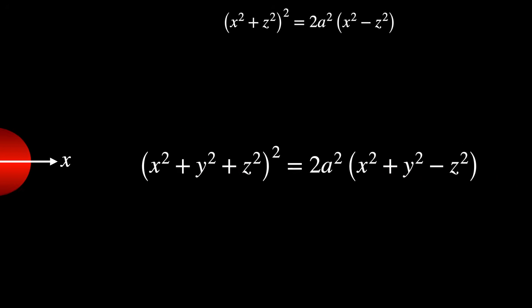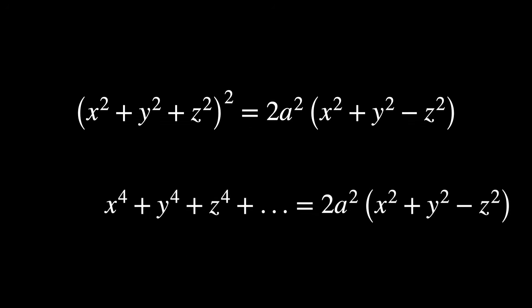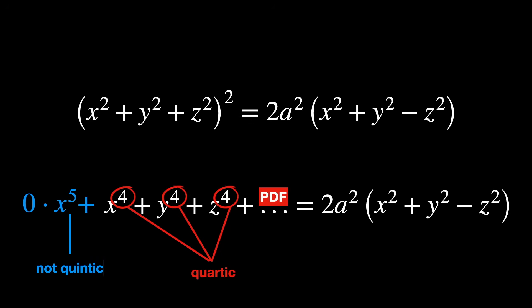The Padushka surface is, thankfully, described by a quartic equation, not a quintic or higher. Otherwise, it would potentially lack exact algebraic solutions, which is a consequence of the Abel-Ruffini theorem. This theorem states that there are no general algebraic solutions, in other words, using radicals, to polynomial equations of degree five or higher.